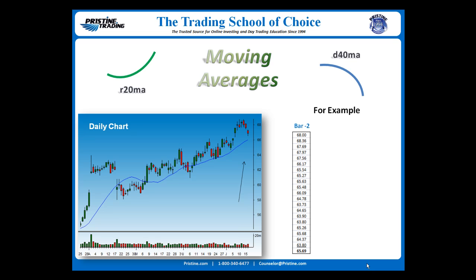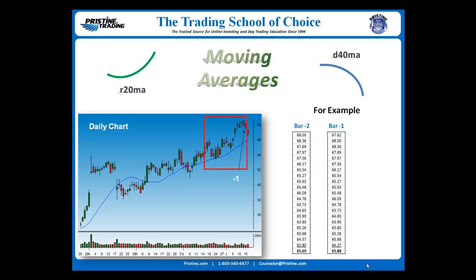If we go to the next bar, one bar prior, you'll see that the new sum of 20 bars is going to drop the oldest bar and add the most current bar. The new average, based on this new set of 20 bars, comes out to 65.88, and notice that's slightly higher than 65.69. So that gets plotted on the moving average, and the moving average continues higher.